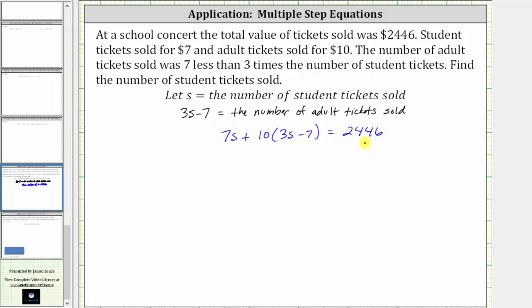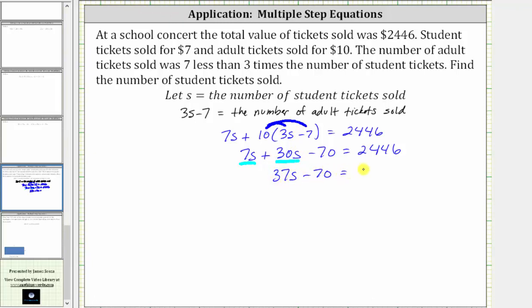The sum of these values is equal to the total value of $2,446. Solving this equation for S, the first step is to simplify the left side by clearing the parentheses and combining like terms. We distribute 10, which gives us 7S plus 30S minus 70 equals 2,446. Combining like terms, 7S plus 30S is 37S, giving us 37S minus 70 equals 2,446.